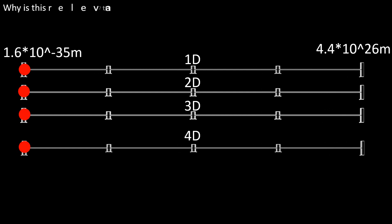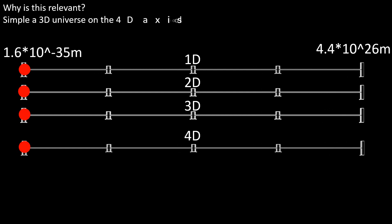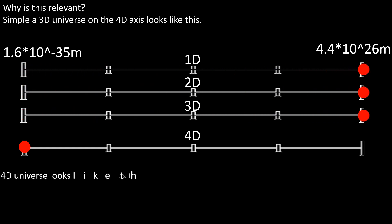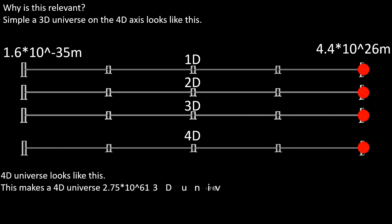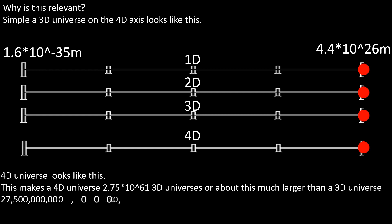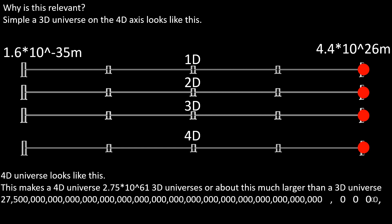Why is this relevant? A 3D universe on the 4D axis looks like this. A 4D universe looks like this. This makes a 4D universe 2.71 times 10 to the 61 times larger than a 3D universe — or about this much larger.